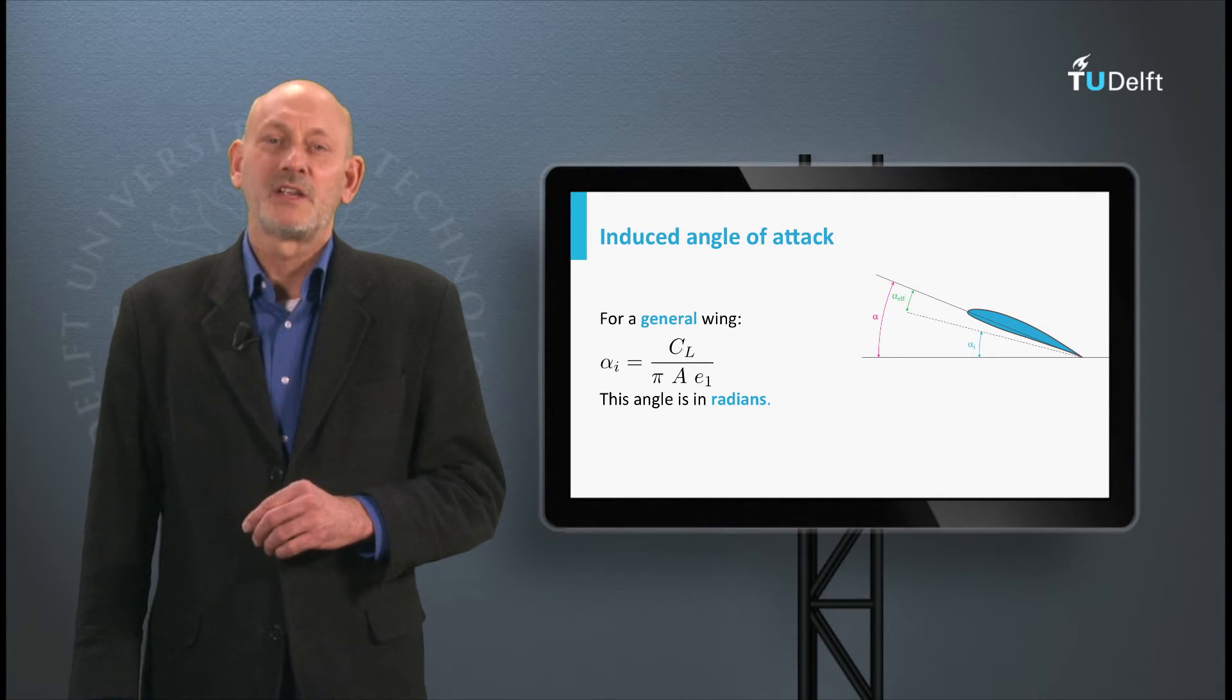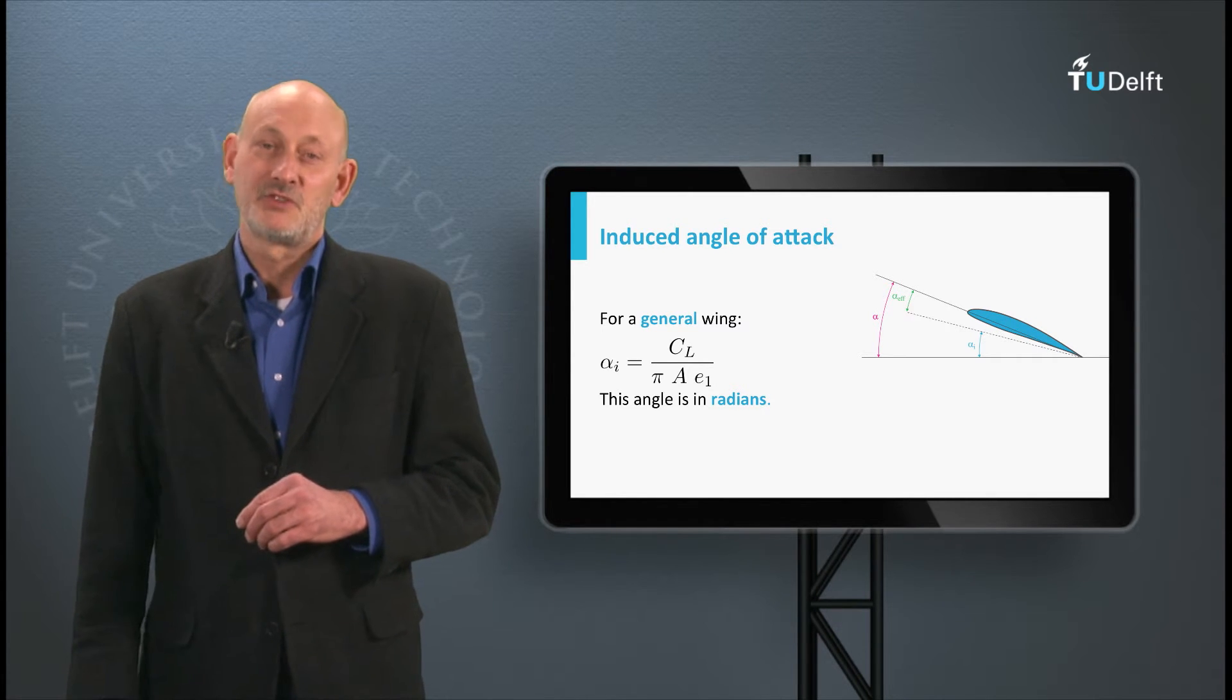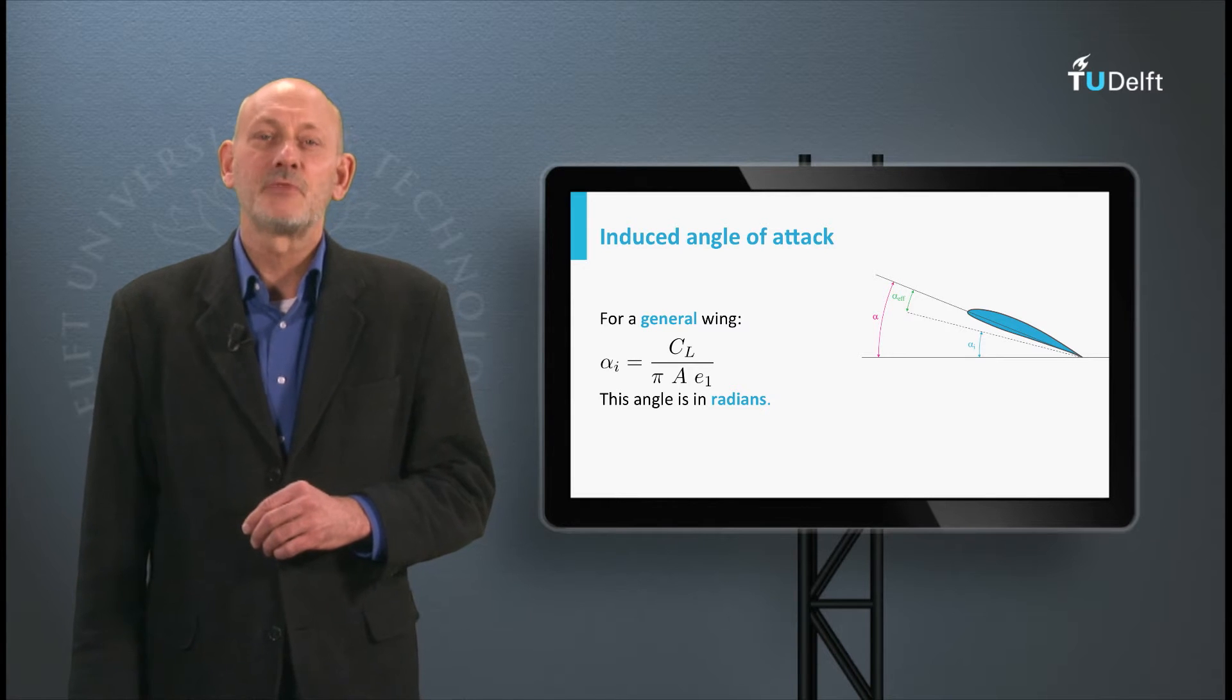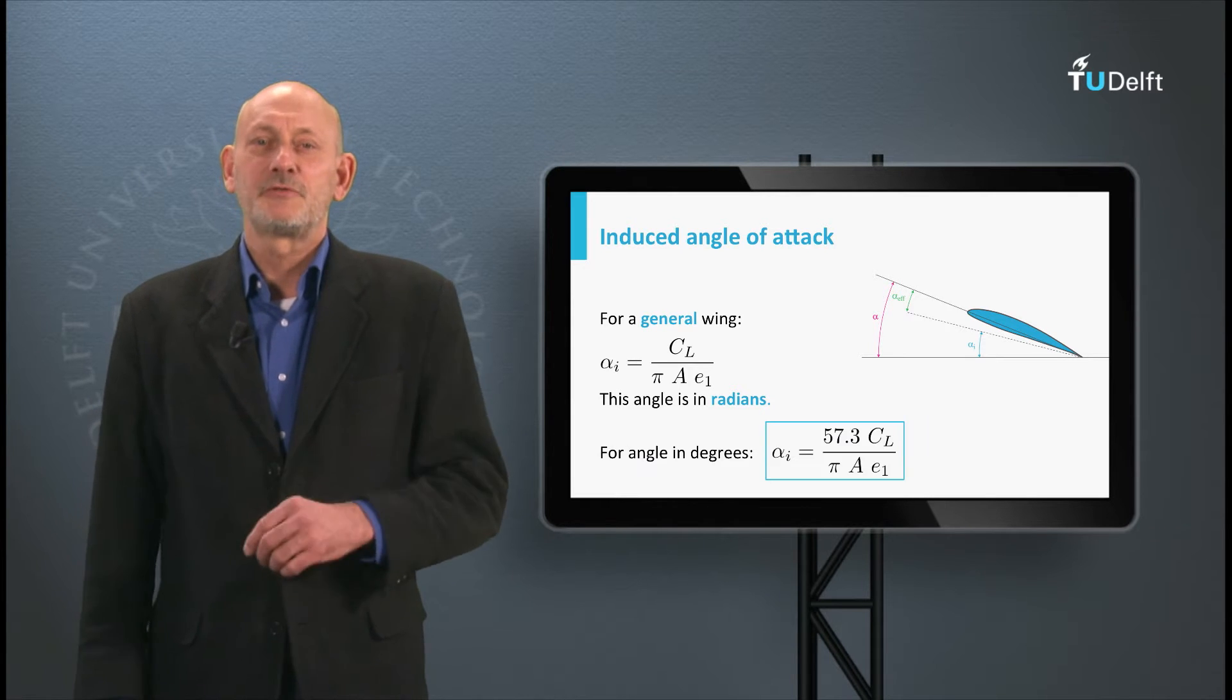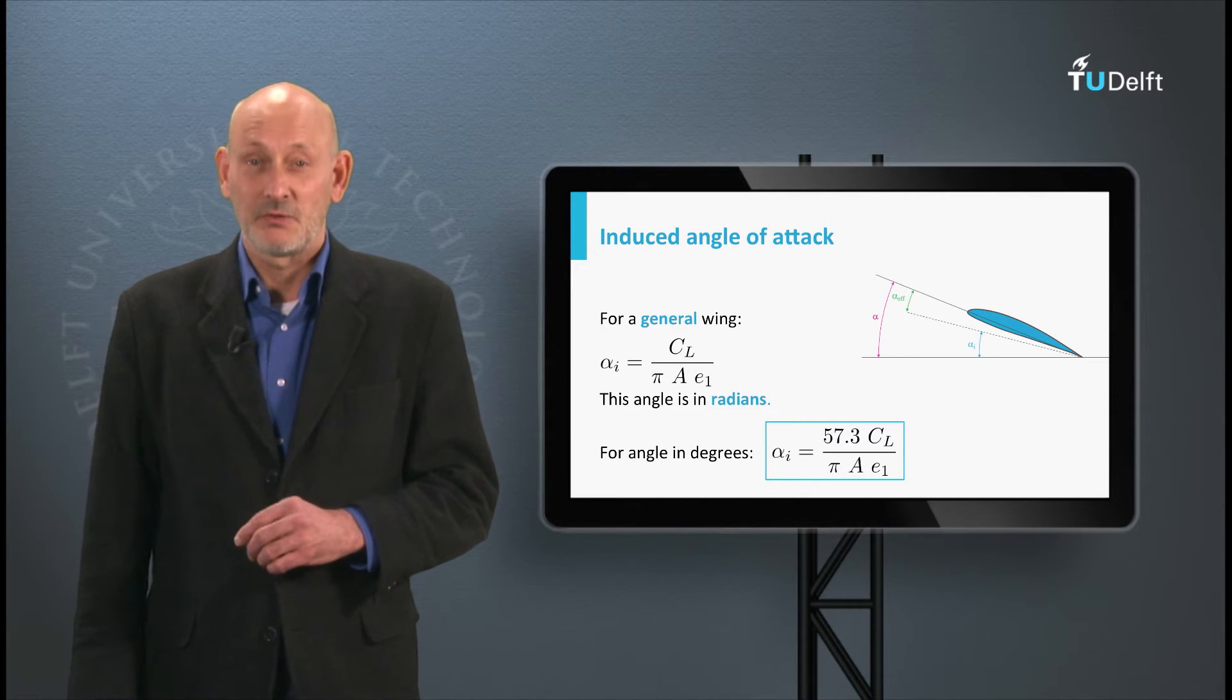For e1 is 1, we have the elliptical load distribution which gives minimum induced drag. Generally e1 is smaller than 1. The angle is in radians. If we transfer it to degrees, we must add the factor 57.3 to it.